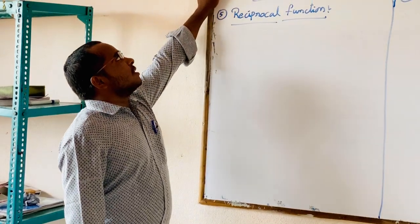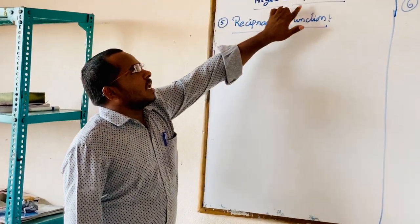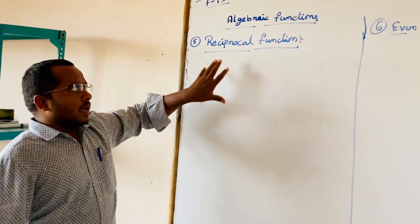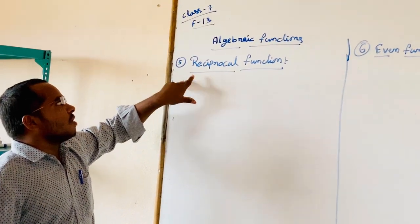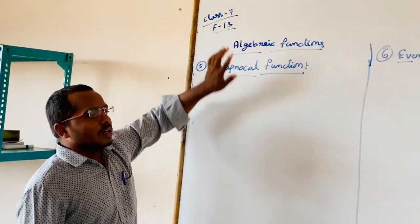Today's session is class 7, algebraic functions, remaining examples, remaining types of functions. Page number is F30.